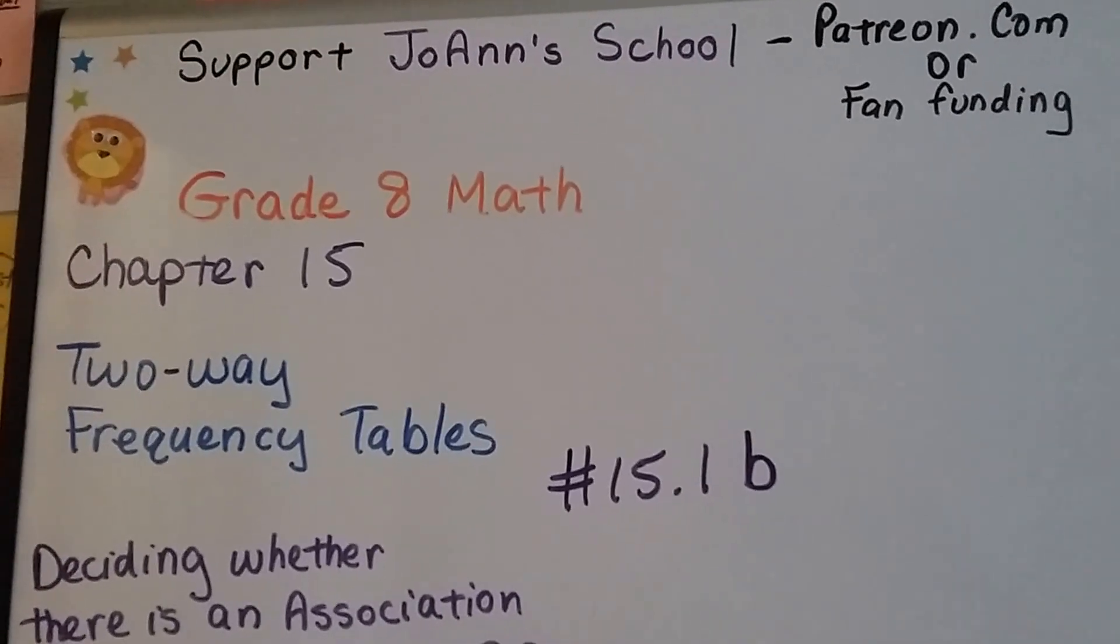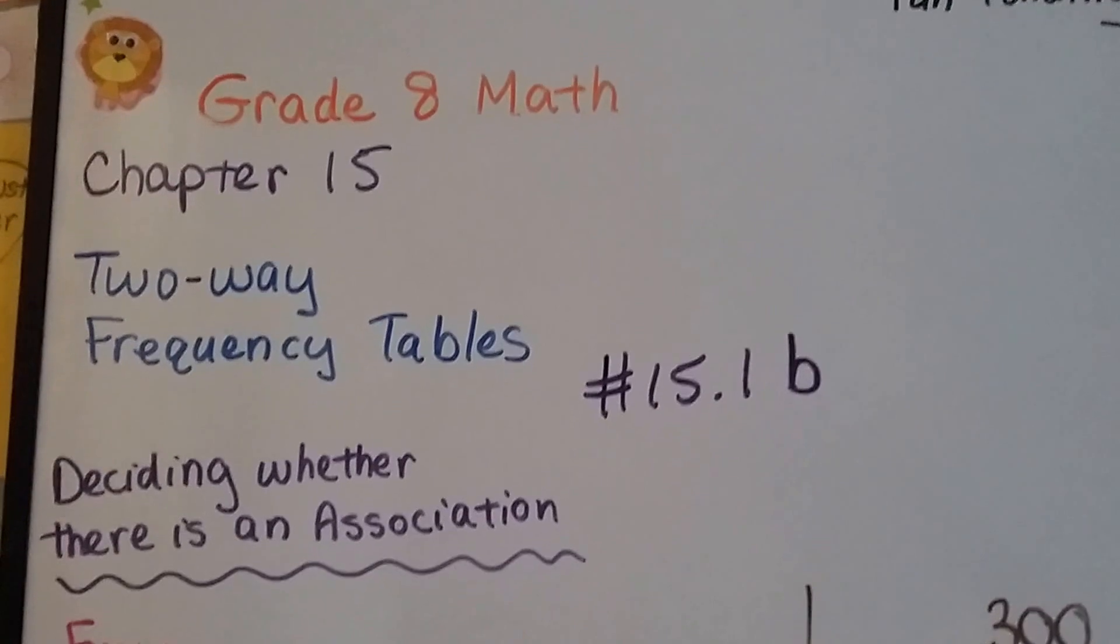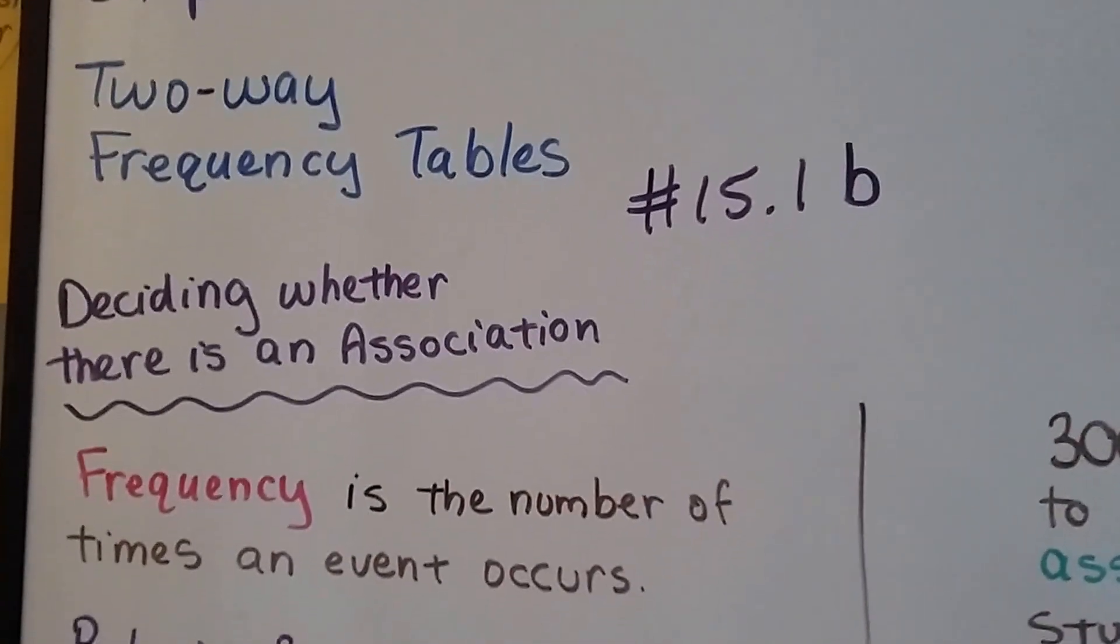Grade 8 math number 15.1b, we're talking about two-way frequency tables. Now we're going to talk about deciding whether there's an association.